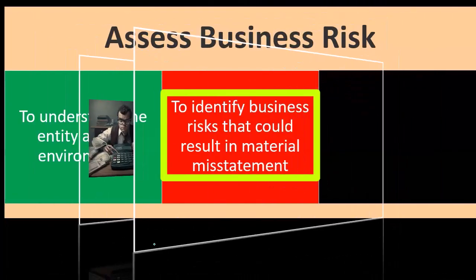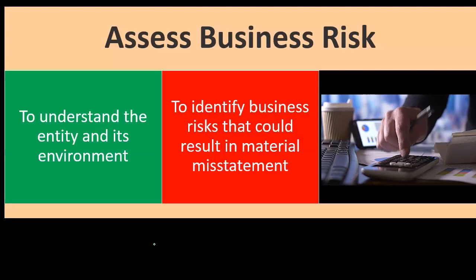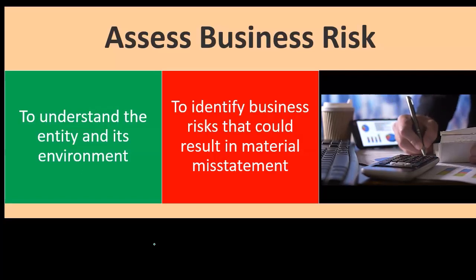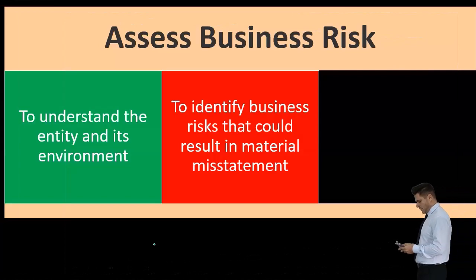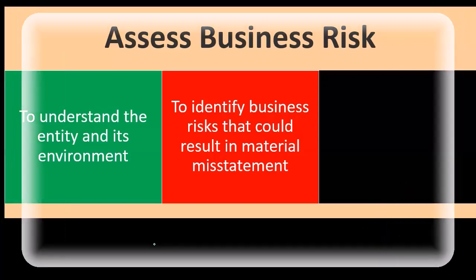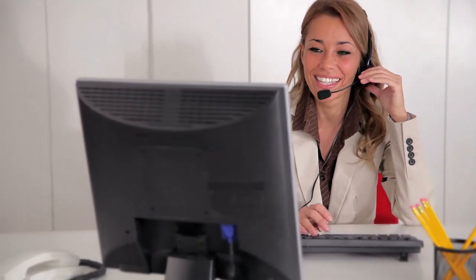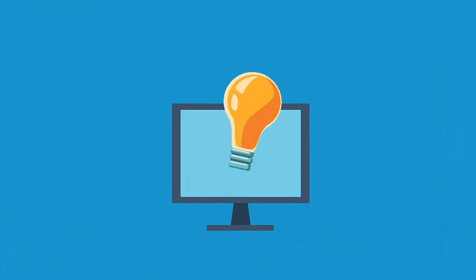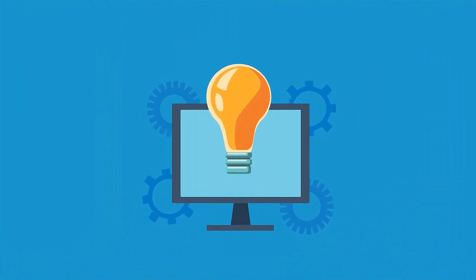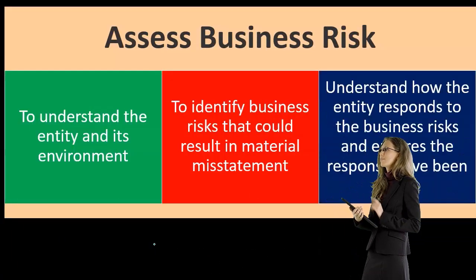As we consider business risks, we ask: what type of environment are they in, what type of entity are we dealing with, and could these factors lead to a higher risk of material misstatement in the financial statements? Some industries are more highly complicated, some are risky in terms of being a going concern, and some are risky or complicated in terms of their business model — all of which can increase the likelihood of misstatements.